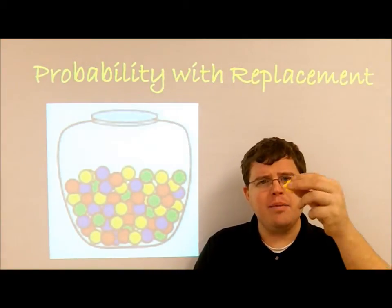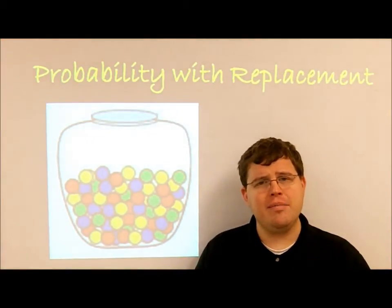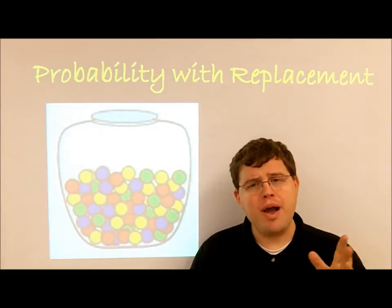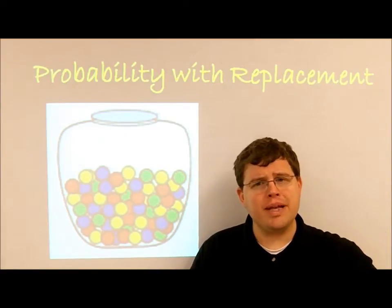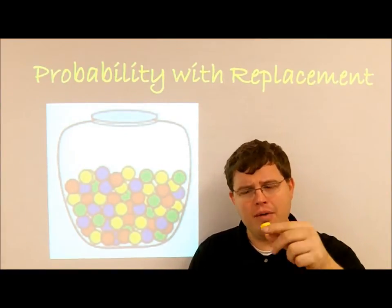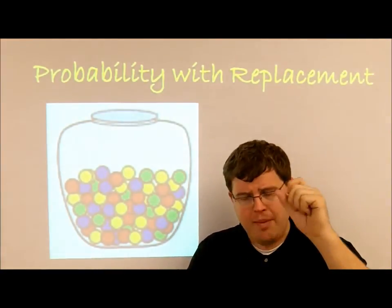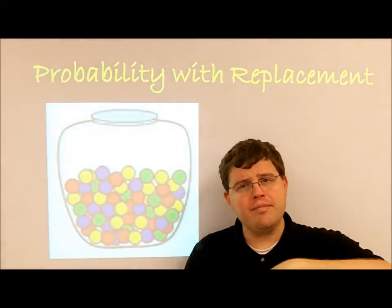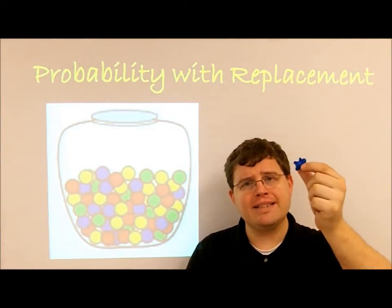I can reach in and pull out my second bear. Probability with replacement means you pull something out, drop it back in, and pull the next thing out.